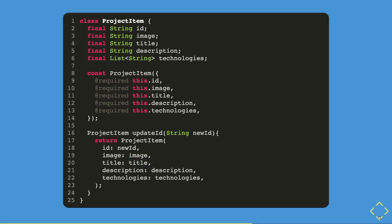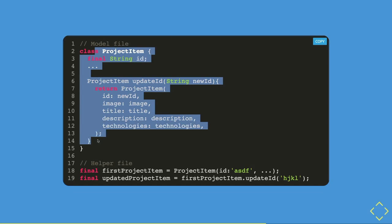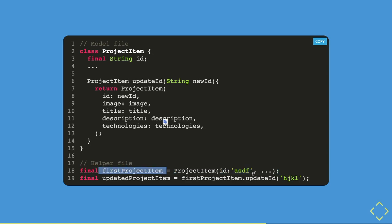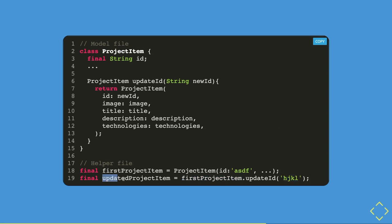If we implement this in an example, we have the project item with the update ID method inside the model file project_item.dart, and we use it inside a helper file or wherever needed. We get the project item — say 'asdf' — then call the project item update ID method, pass in the new ID, and assign it to a new variable. We don't need to pass the old object separately; we just call the method on the current object.